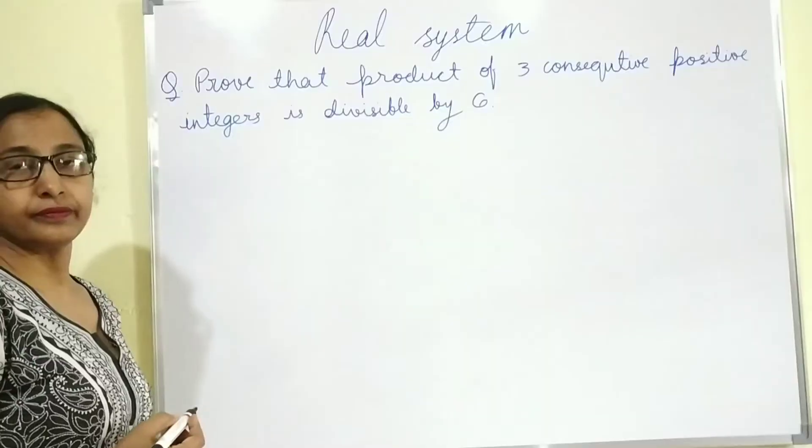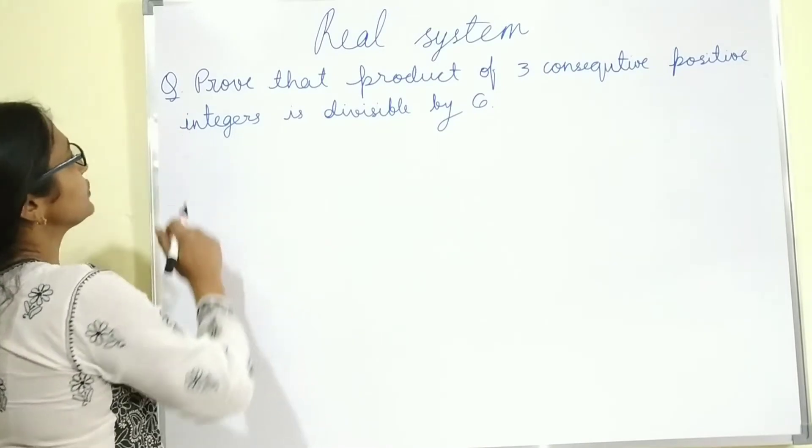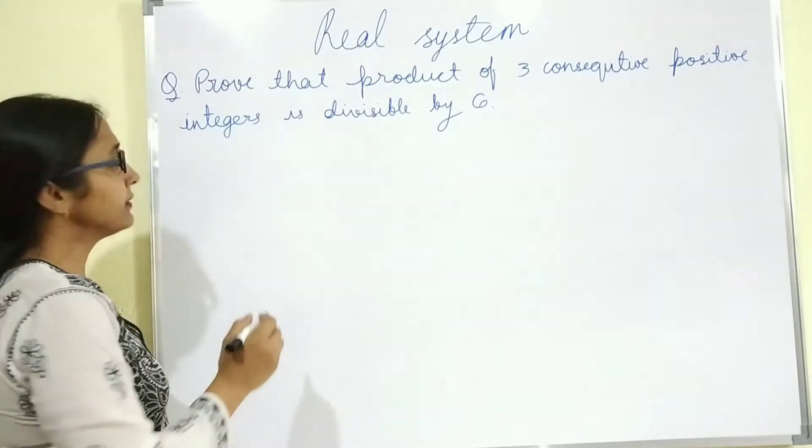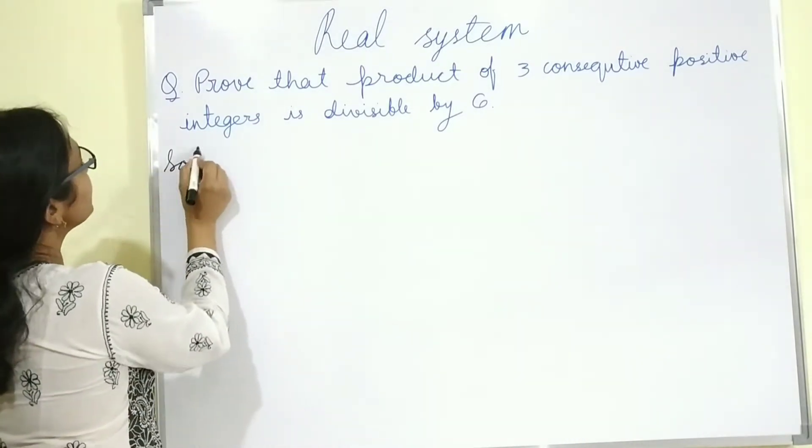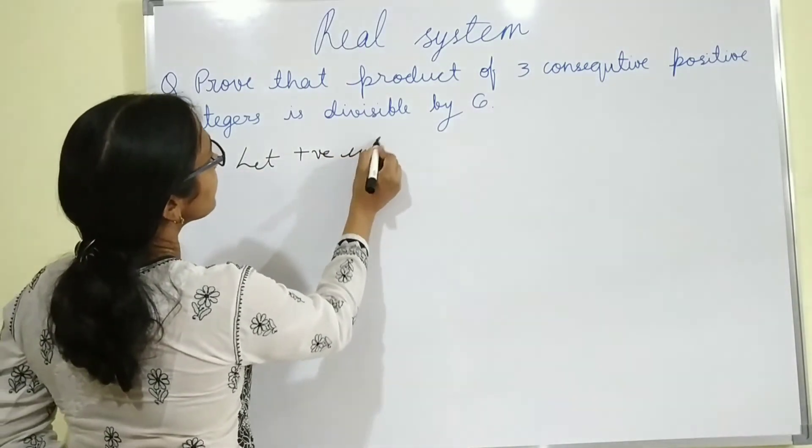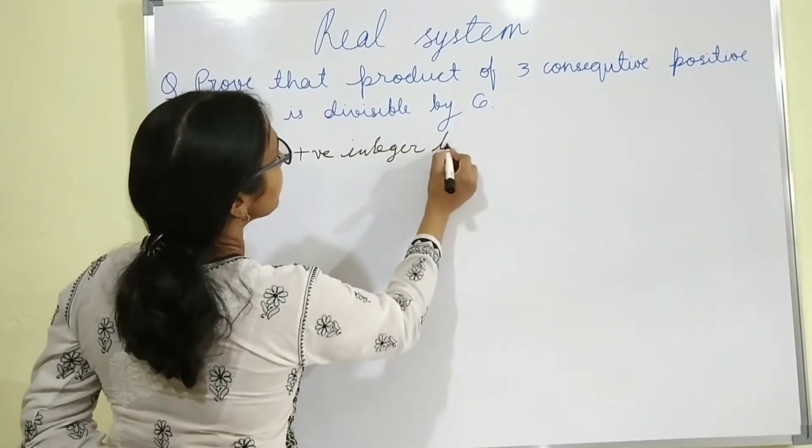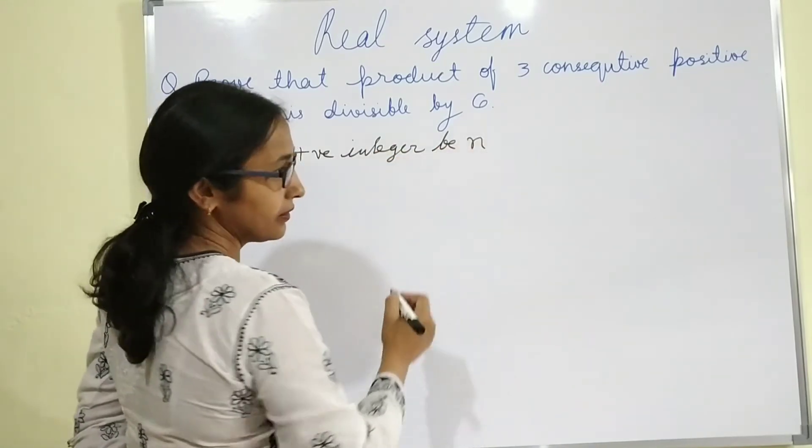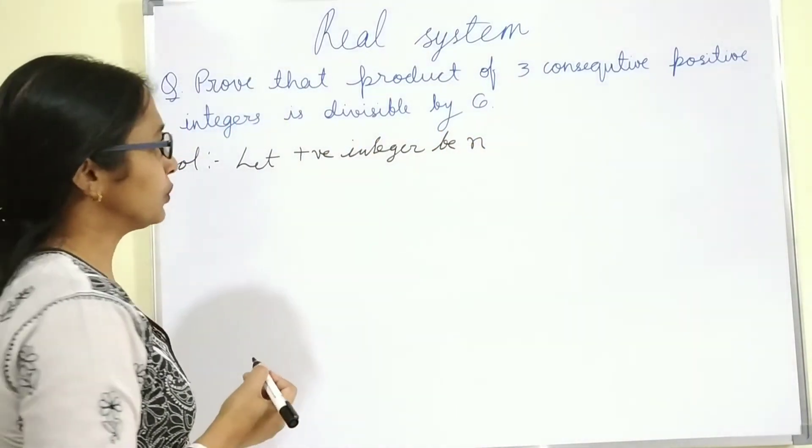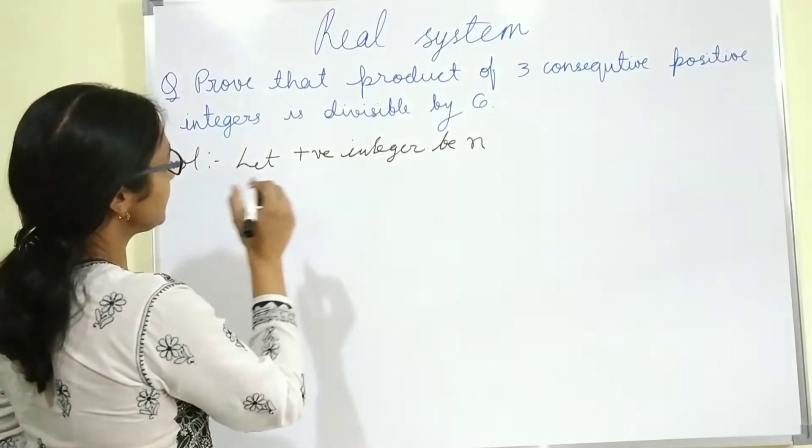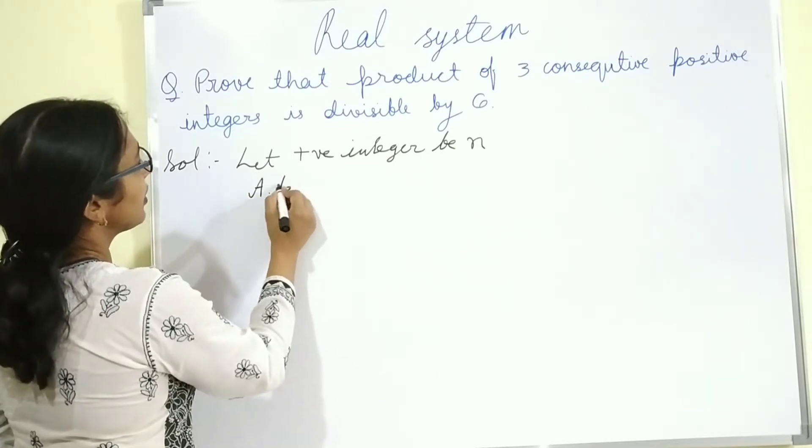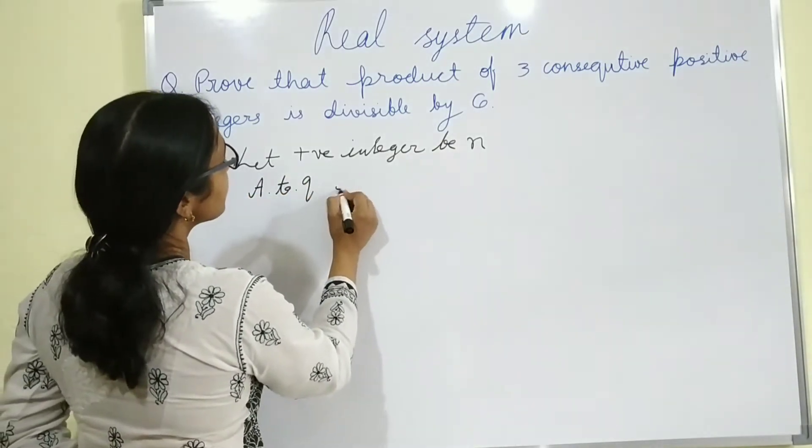Now next question is prove that product of 3 consecutive positive integers is divisible by 6. So solution is let positive integer be N. So its consecutive will be N plus 1, N plus 2. According to the question, integers will be in form of 6Q, 6Q+1, 6Q+2, and so on.